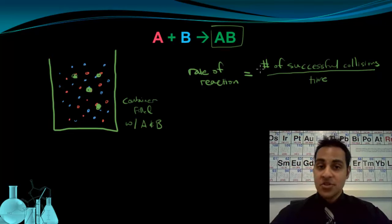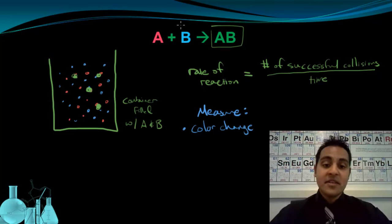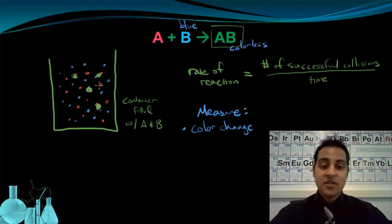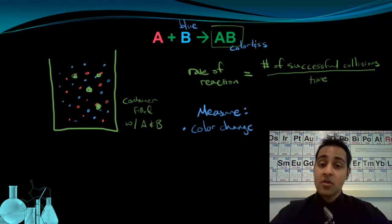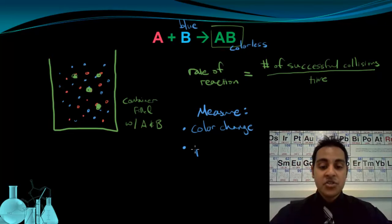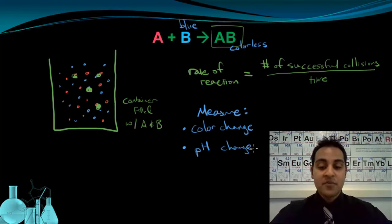So because we can't measure the number of collisions by counting, we instead measure other things, such as a color change. Let's say that the B molecules were blue, but AB is colorless. That means at the start of this reaction, the container would be filled with blue particles. As the reaction proceeds, the blue would slowly go away as the B molecules are used up, and the container would start becoming colorless. So we can measure the rate of color change — the speed at which the blue fades. Another thing we can measure is the change in pH. If either A or B is an acid or a base, as it's consumed the pH is going to change, and we can look for the change in pH over a certain amount of time. Again, we're simply looking for measurable changes.